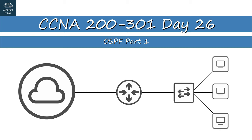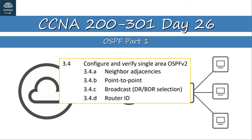OSPF is topic 3.4 of the CCNA exam, which states you should be able to configure and verify single-area OSPF v2, with the four subtopics being neighbor adjacencies, point-to-point, broadcast, and router ID. We'll cover all of these topics and more. This first video will focus on some basics of OSPF — consider this a high-level introduction to some OSPF concepts and configuration, and in later videos we will go lower down into the details.